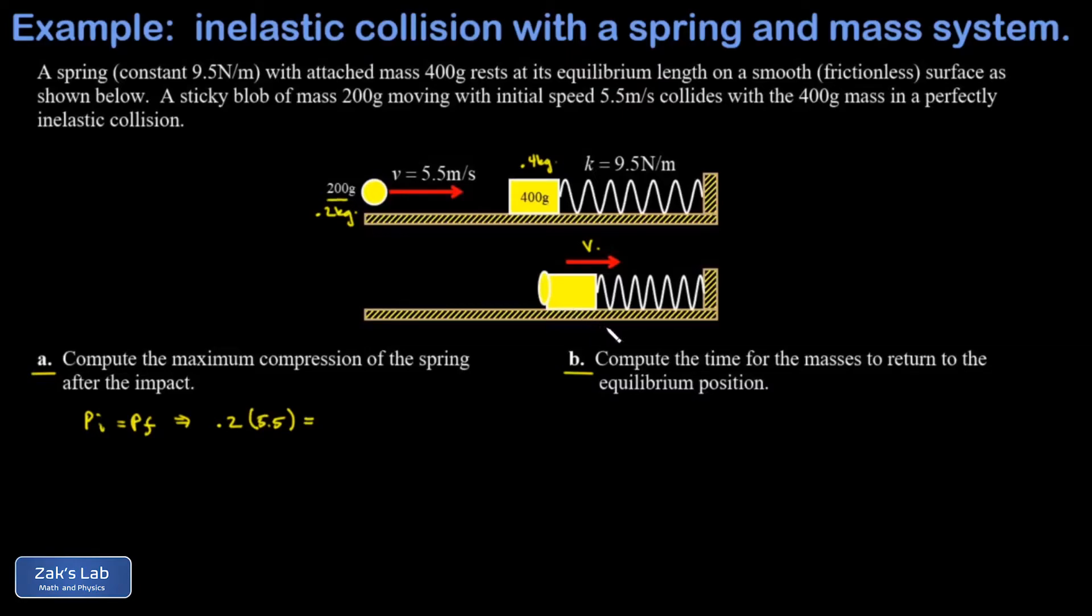The spring has not compressed yet, so we don't have to worry about the external force on these masses. When they're combined, that's 600 grams or 0.6 kilograms multiplied by that speed after impact v. So we run the numbers on this and we find that v is 1.833 meters per second, just keeping a little extra precision for the moment.